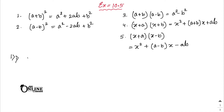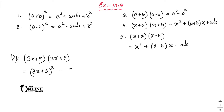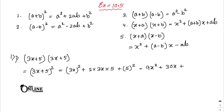In Sum 1, you have (3x + 5)(3x + 5), which is (3x + 5)². Applying the (a + b)² formula: a² + 2ab + b², the answer is 9x² + 30x + 25.